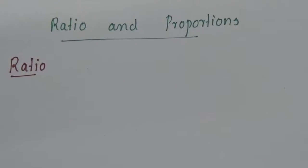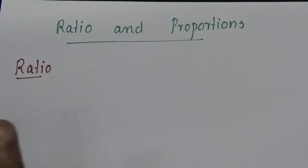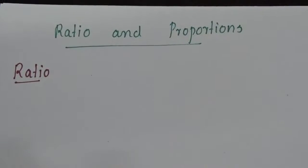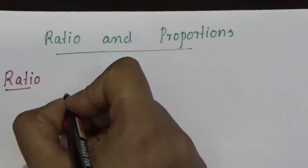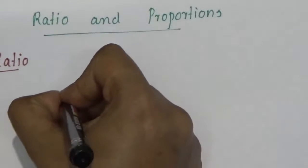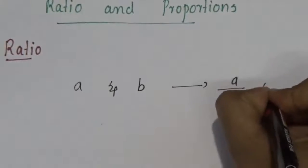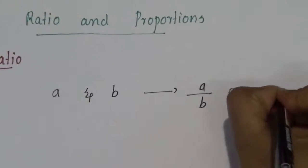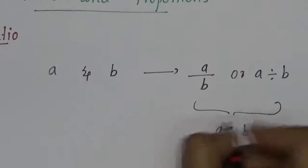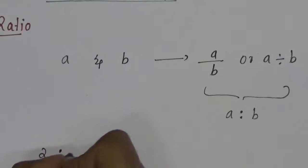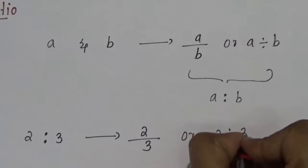Ratio and proportions. First, ratio. What is ratio? Ratio is the relation existing between any two quantities of the same kind. Suppose two quantities A and B. The ratio of A and B of the same kind is written as A by B, or A divided by B, and it is denoted as A is to B. For example, two is to three can be written as two by three, or two divided by three.